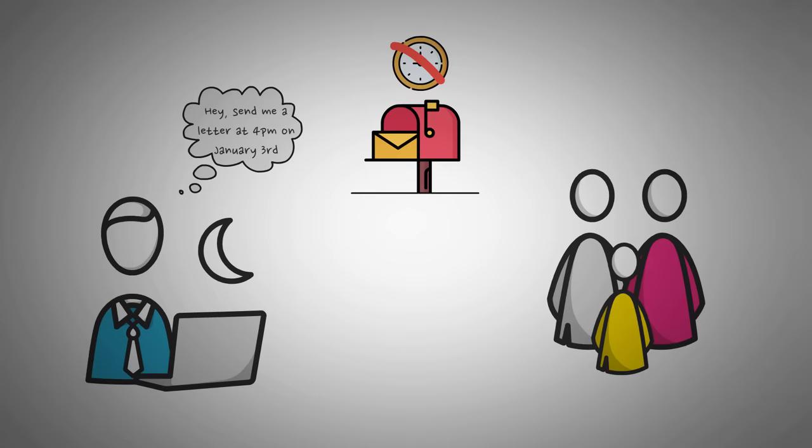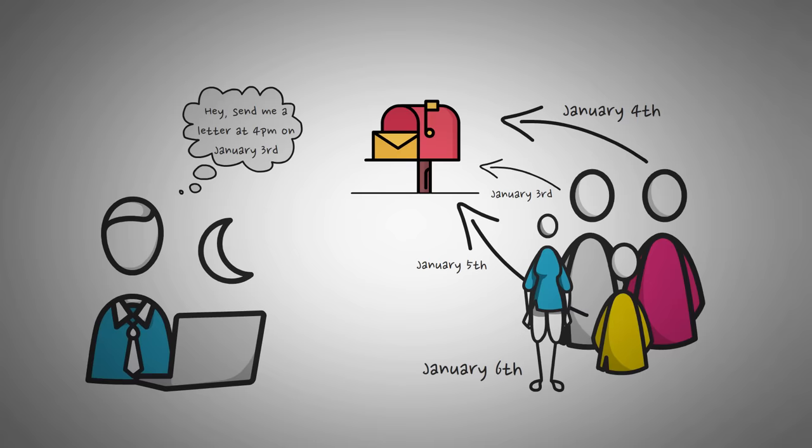you could set it up so that your uncle sends a letter on January 3rd, your aunt on January 4th, your cousin on January 5th, and then your grandma on January 6th. We want to read these letters in order, but the issue is that they each use different mail providers, like UPS and FedEx.